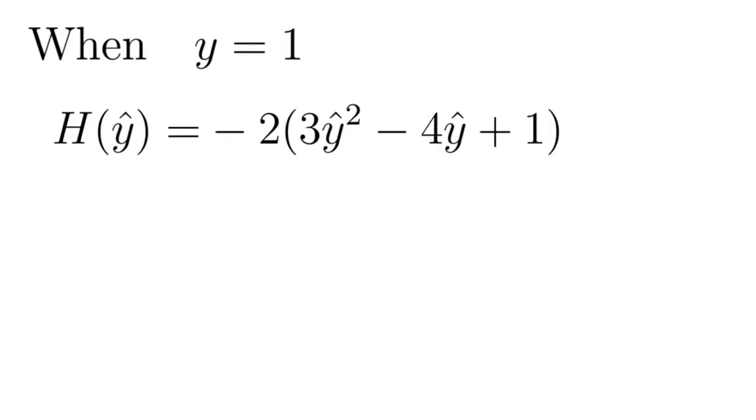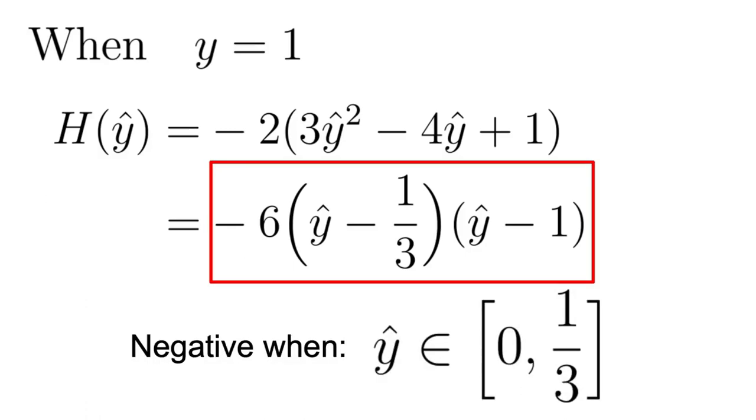When y equals 1, we obtain the following result and by factorizing, we get the final form that we are going to use. When ŷ lies in the range [0, 1/3], the function H(ŷ) is less or equal than 0. And when ŷ lies between 1/3 and 1, the function H(ŷ) is greater or equal than 0. This also shows that the function is not convex for y equals 1.